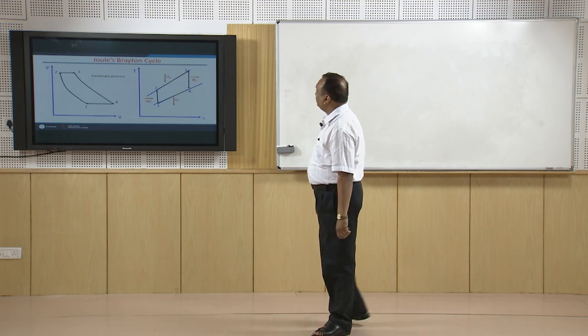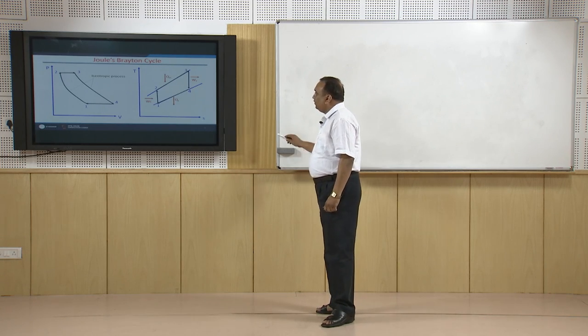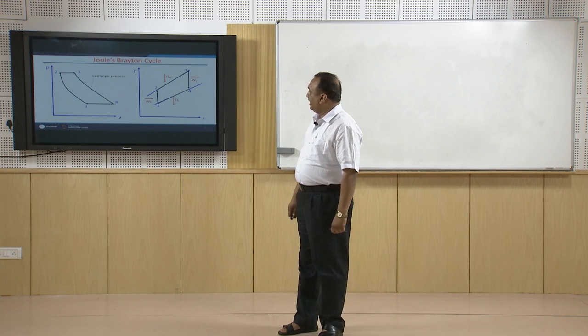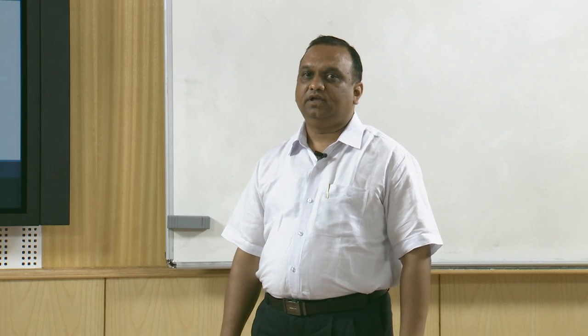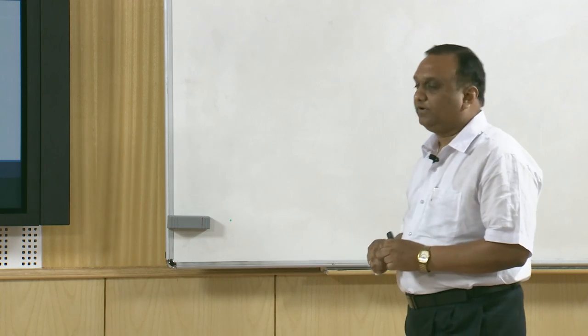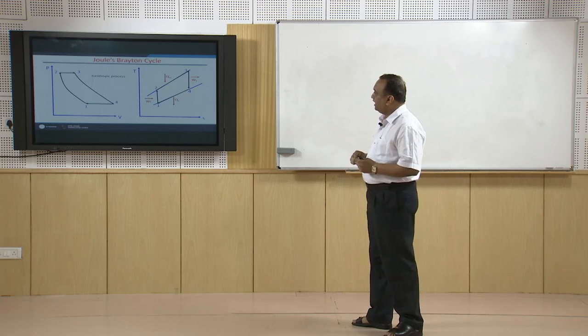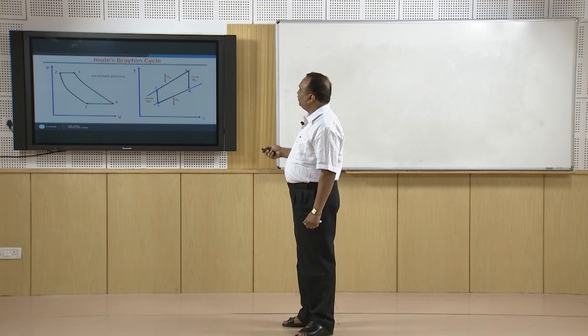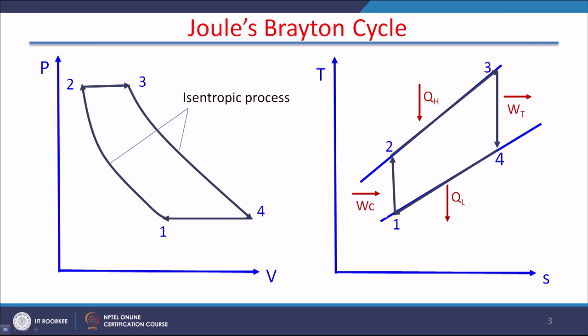Starting with the Joule-Brayton cycle — it is an air standard cycle for power generation and this cycle is used for power generation in gas turbines. In this cycle there are two isentropic processes and two constant pressure processes. This cycle is depicted on the pressure-volume diagram and also on the temperature-entropy diagram.